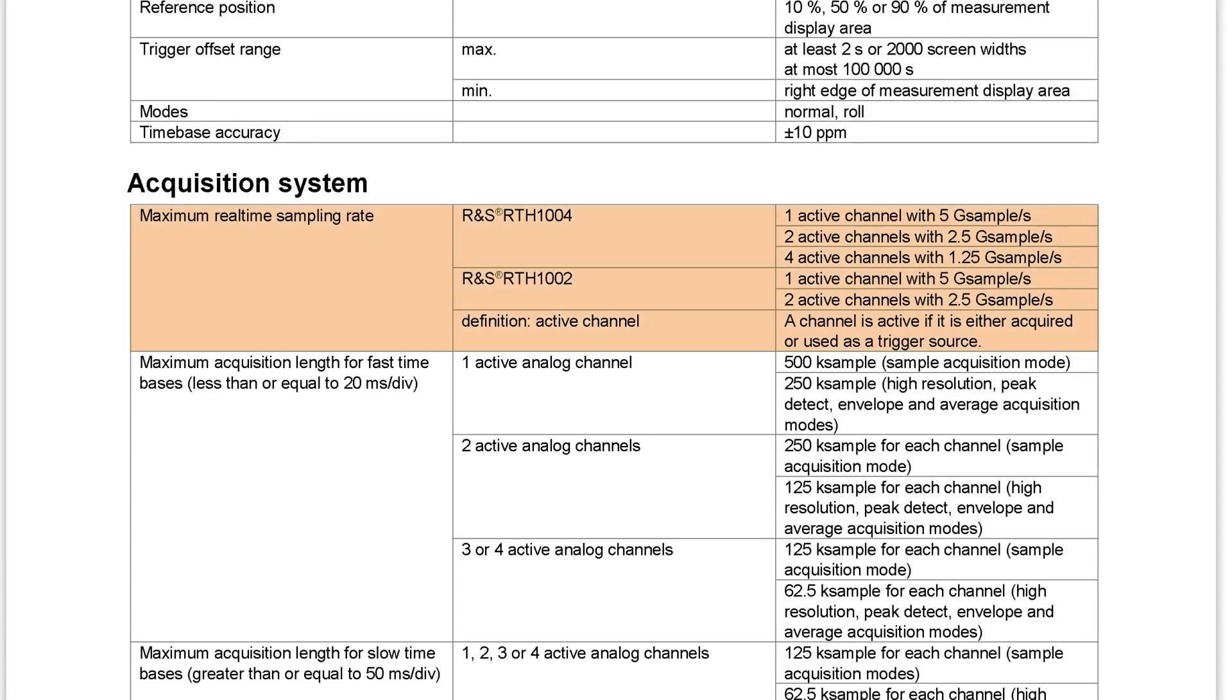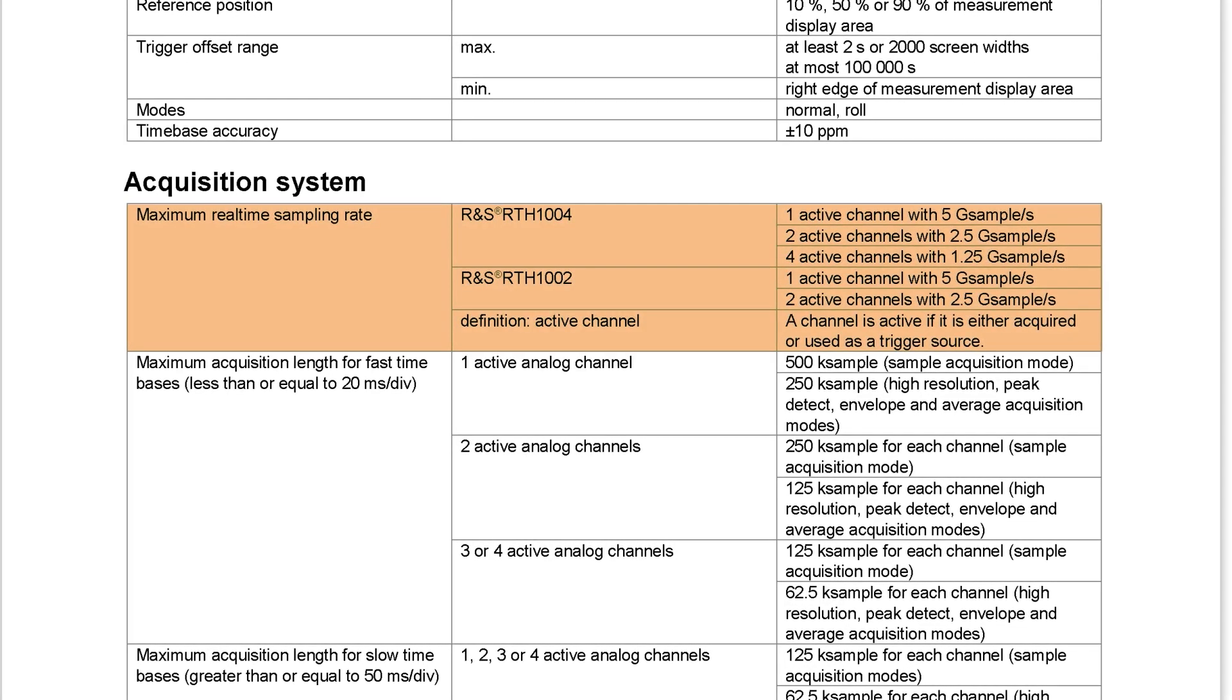Using this scope as an example, it has up to 500 MHz of bandwidth, with sample rates as high as 5 gigasamples per second. One mistake I've noticed people make is that they confuse bandwidth and sample rate.